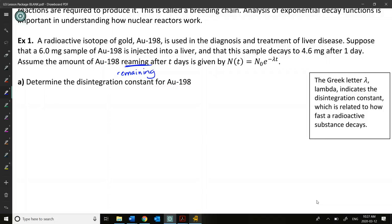Remaining after T days is given by our function N at T equals N initial or N naught, sometimes we call it, and then it's going to be E to the exponent, this is the Greek letter lambda, times T. So lambda, if we look over here, this is a little summary of what that is, it's called the disintegration constant. And you'll see the disintegration constant with a variety of radioactive substances.